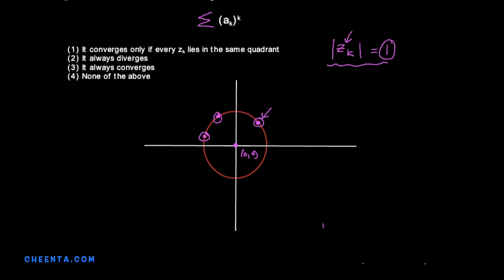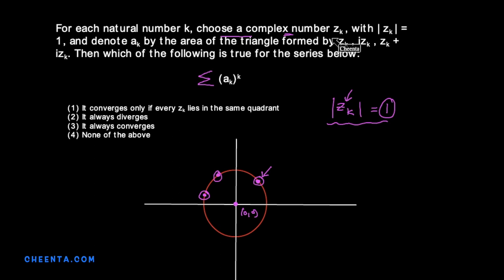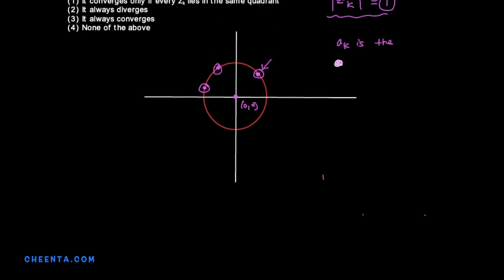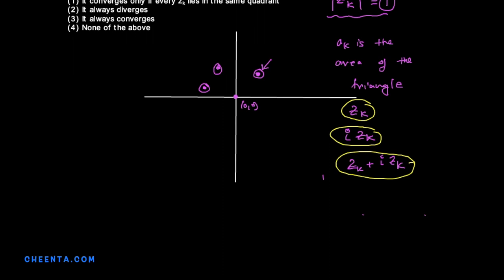Okay, so we choose such points zk and we denote ak. What is ak? Ak is the area of the triangle formed by zk, i times zk, and zk plus i times zk. These three points. You have to imagine the complex numbers as just points in the plane and then this problem becomes very easy. Let's see what I mean by that.